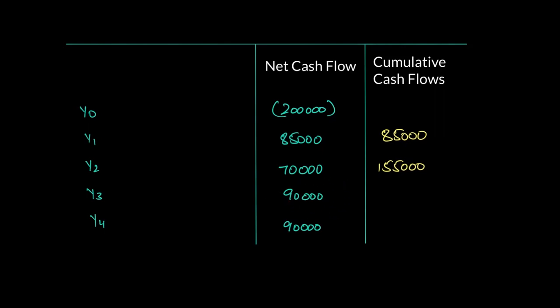In year three we earn 90,000, so the cumulative cash flows become 245,000 (155,000 + 90,000). At this point we've gone past our investment — we had to recover 200,000 and we've now recovered 245,000. So we recovered our money somewhere between year two and year three, but we need to find the exact month as well.